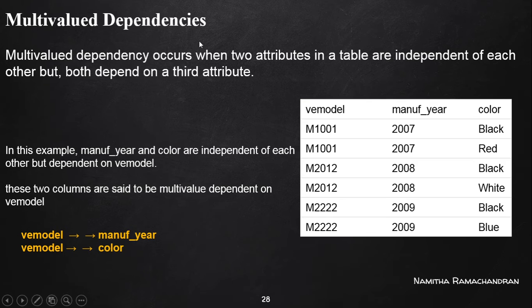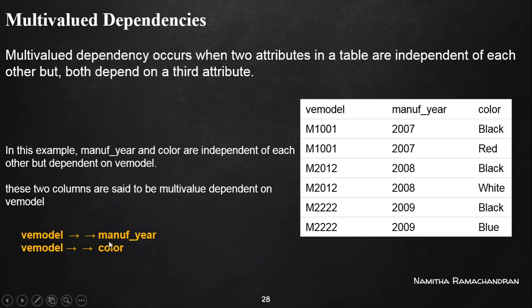In the case of multivalued dependency, we represent it using double-arrow notation: vehicle model multi-value determines manufacturing year, and vehicle model multi-value determines color. This makes it clear that both color and manufacturing year are dependent on vehicle model, but manufacturing year and color are independent of each other. This is the condition for multivalued dependencies to exist.